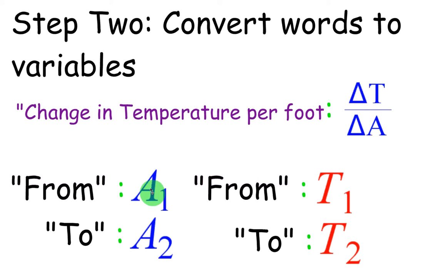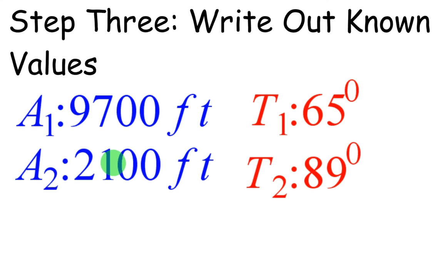From altitude 1 to altitude 2, from temperature 1 to temperature 2. So our altitude 1 was 9,700 feet, very high. Temperature 1 was 65 degrees. Down altitude 2, 2,100, and temperature 2 is 89 degrees.